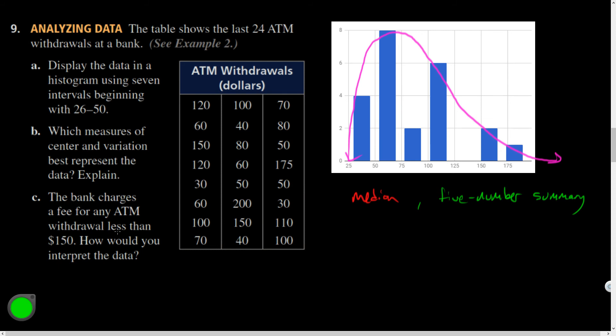Now they ask this question. The bank charges a fee for any ATM withdrawals less than $150. How would you interpret the data? So the table shows that the last 24 ATM withdrawals at a bank. So if there's a fee when it's less than 150, how many situations does that apply to? It would be all of these situations. Like so. So that's four plus eight is 12. Here's another two. That's 14. Here's another six. 20. So it looks like 20 out of how many total were there? Two and one. 20 out of 23 of the withdrawals would have been charged a fee. Because they were less than 150.